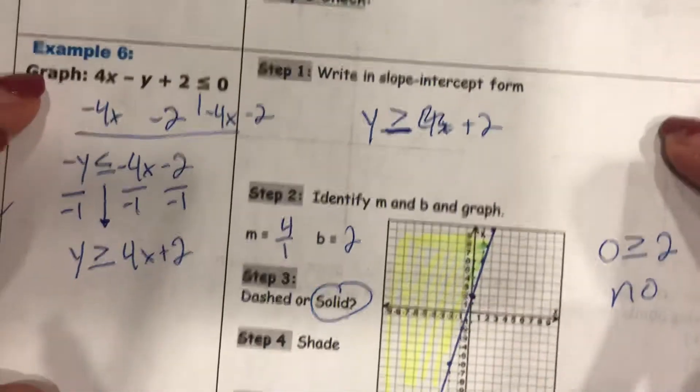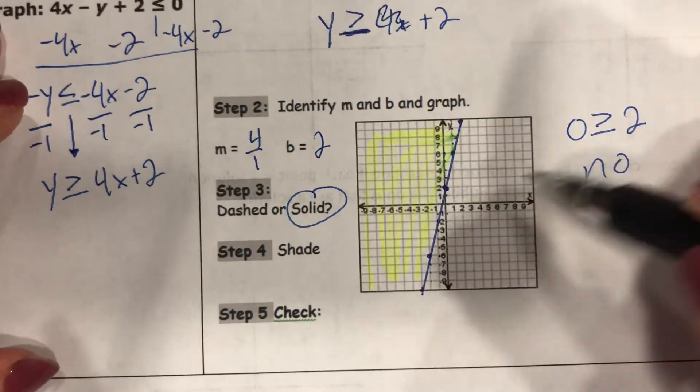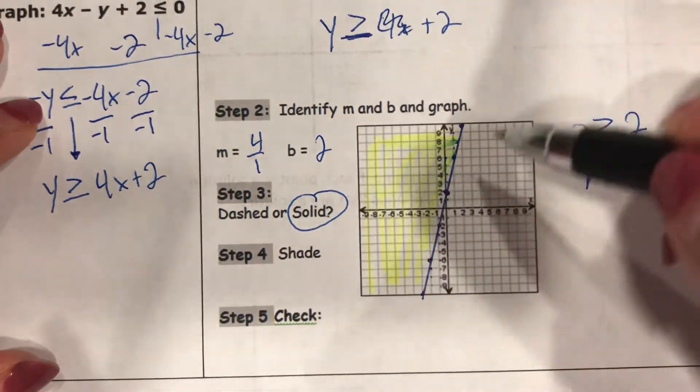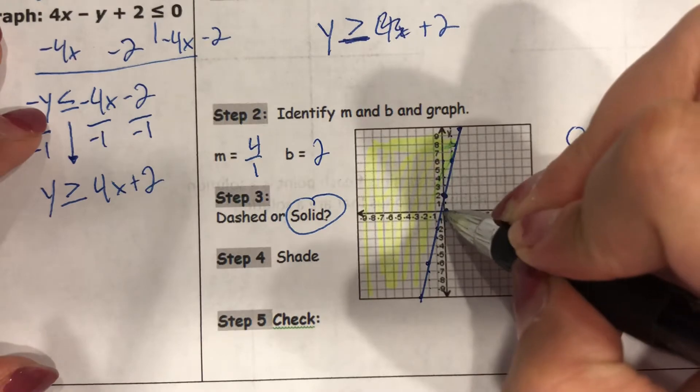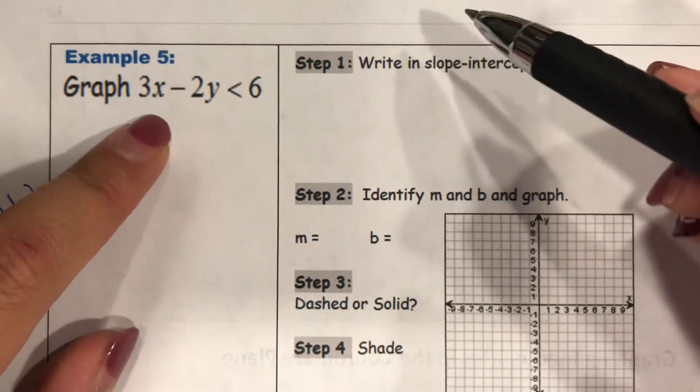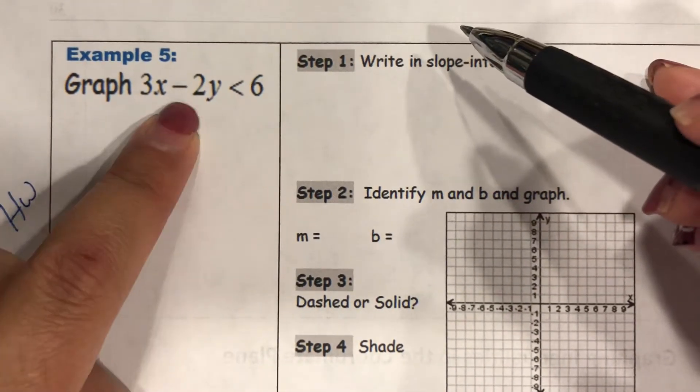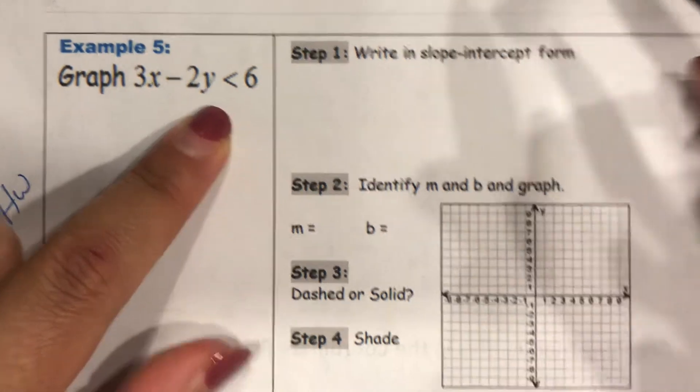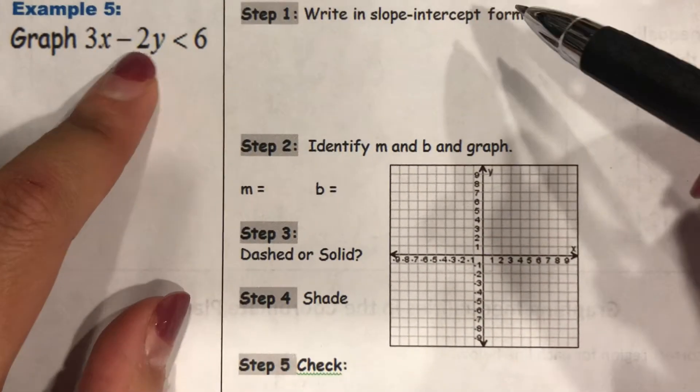So we just finished doing this one. Again, that was a no - we shaded this side because here is my point (0,0), so I need to shade the other side. You guys are going to do the exact same thing for example five. You're going to move this x over, divide by a negative two.